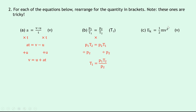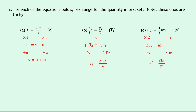Lastly for part C we've got the kinetic energy equation: Ek equals a half mv squared, and we have to rearrange for v. Note that we've got a v squared term, so we'll need a square root at some point. First multiply both sides by 2 to get 2Ek equals mv squared. Then divide both sides by m to get v squared equals 2Ek over m. Finally, taking the square root of both sides gives us v equals the square root of 2Ek divided by m.